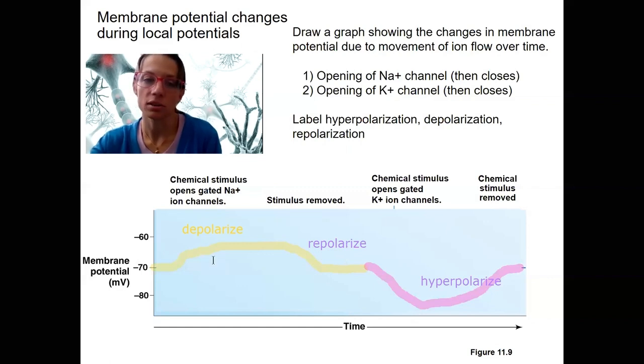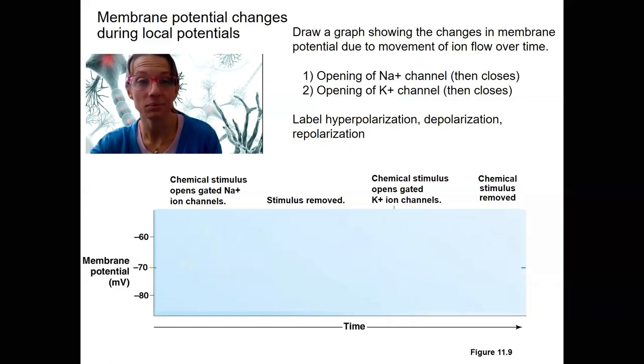So local potentials, these are both examples of local potentials. Blips, changes in membrane potential, not yet an action potential. That distinction will come clear later. Local potentials can either be depolarizing or hyperpolarizing. They can make the inside of the cell either more negative or more positive, depending on what? Depending on what kind of channels open, right? Because the channel that opens is going to determine what ion is able to go through. Different ions move through in different directions. I'll tell you right now, calcium and chloride are two other ions that can move and will move through differently.